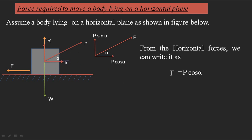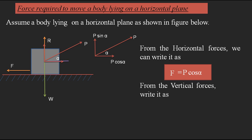Both F and P cos alpha are in opposite directions. Taking the sum: F minus P cos alpha equals zero, so F equals P cos alpha. Remember this equation from horizontal force equilibrium: F = P cos α. For the vertical forces, we have W downward, normal reaction R upward, and vertical component P sin alpha upward. Since R and P sin alpha are in the same direction, we add them.